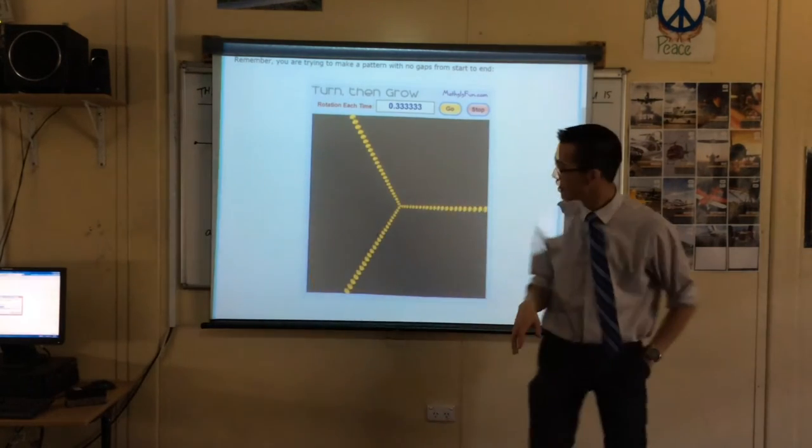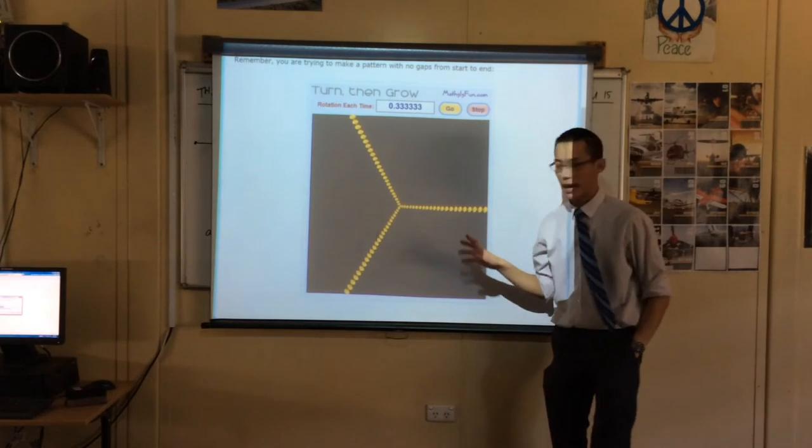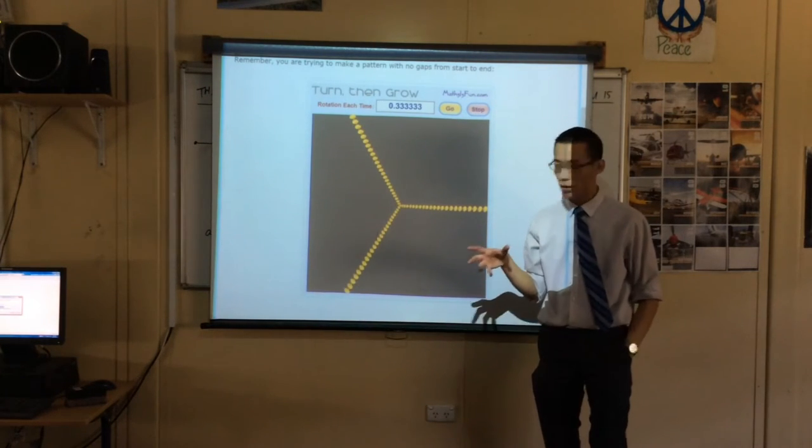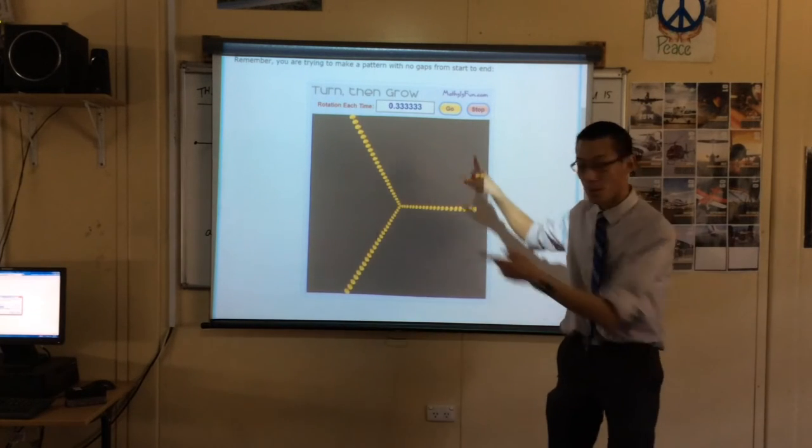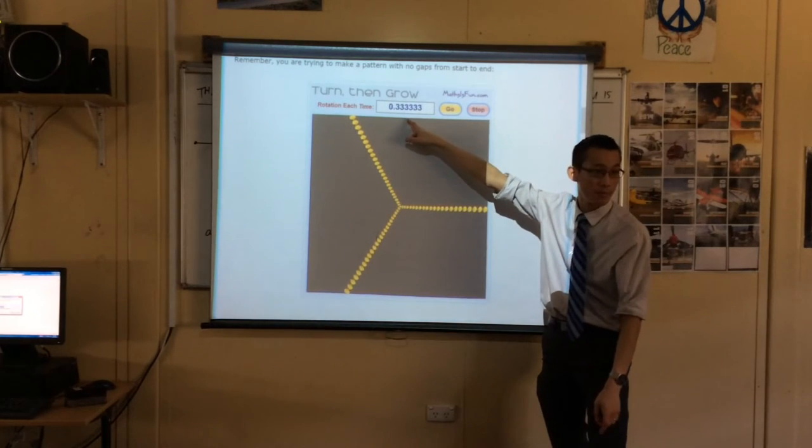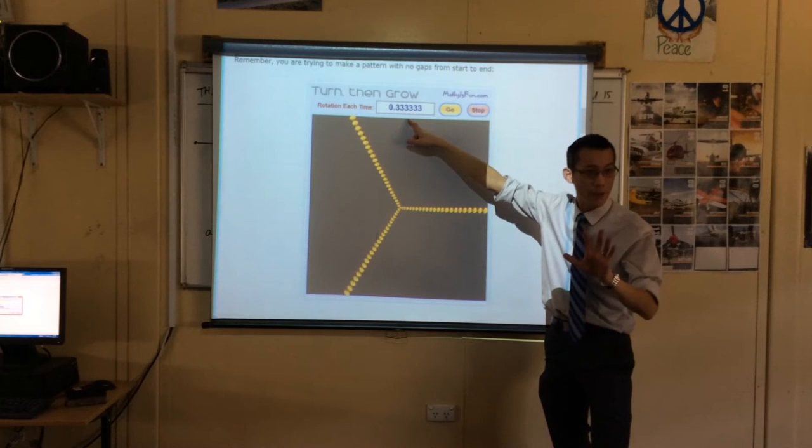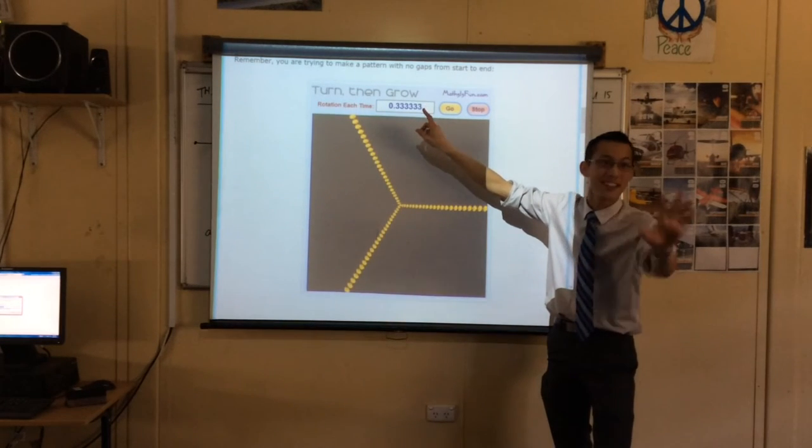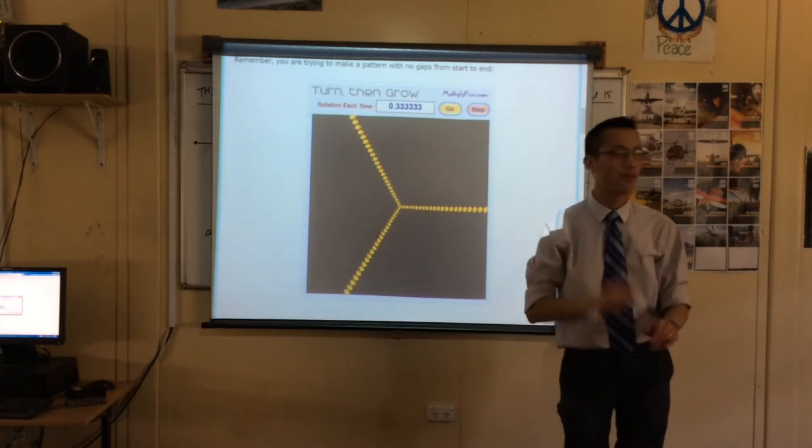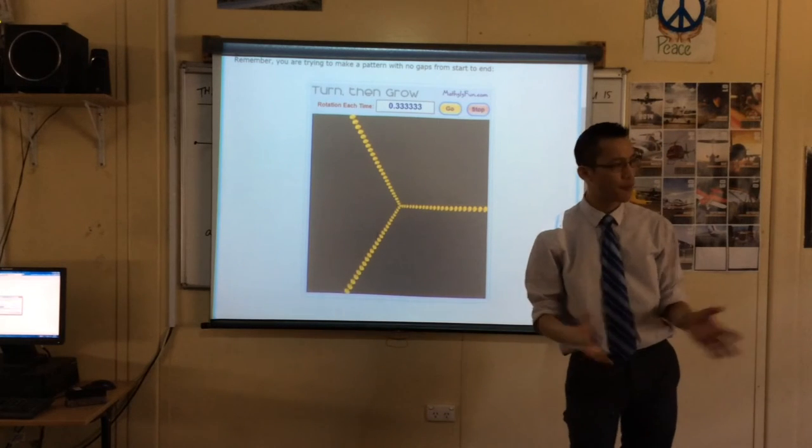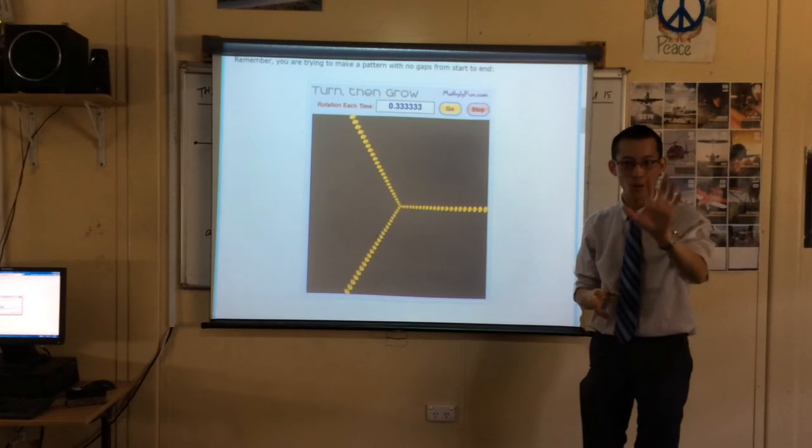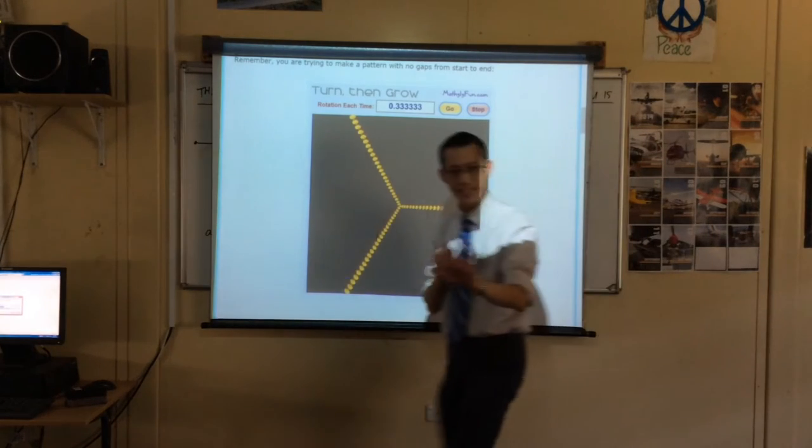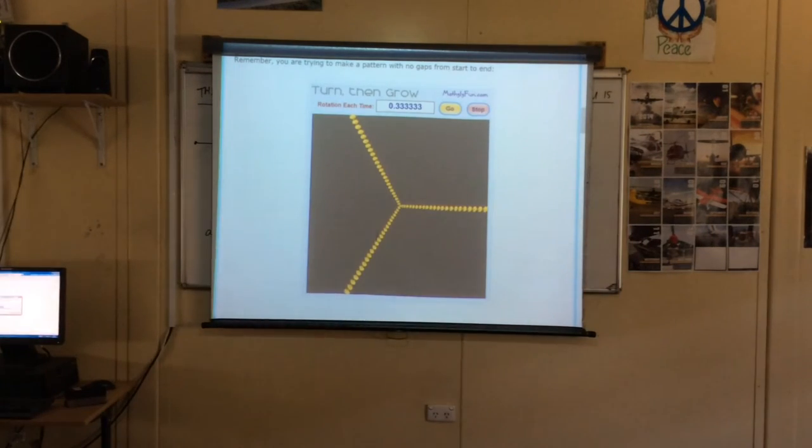Now, in a second, I'm going to put a new number in. I could do a fifth, and you would rightly predict that how many arms would you get if I did 0.2 up here? Five. You would expect five, wouldn't you? Now I'm not going to put that in, because that's too easy. I'm going to put in 0.4 instead. What's 0.4 as a fraction? Two fifths. That's two fifths. Pause for a second. What do you predict will happen? It's not a fifth, it's two fifths. Are you ready?